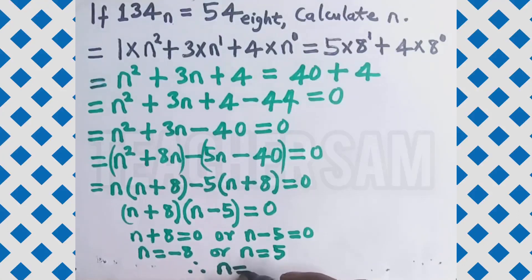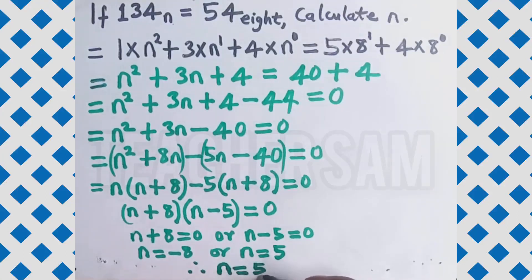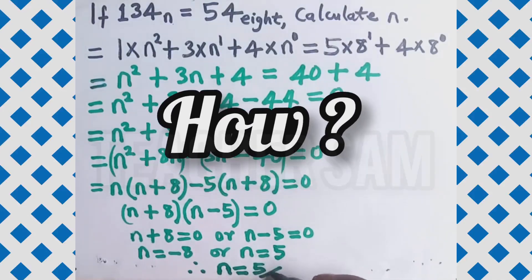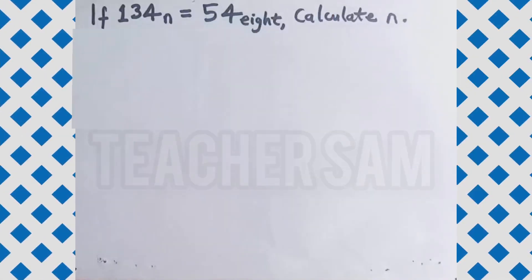The value of n is equal to 5. If 1, 3, 4 base n is equal to 54 base 8, calculate n.